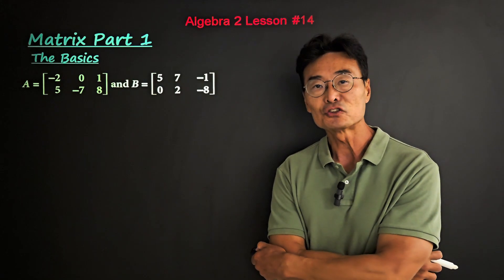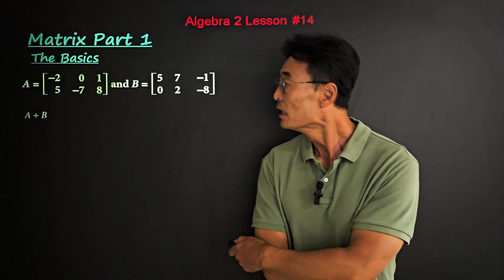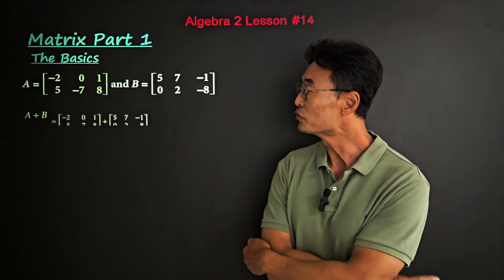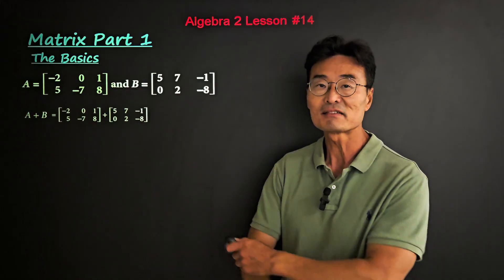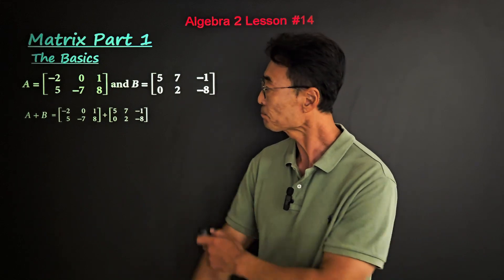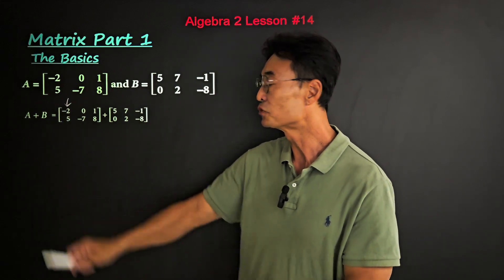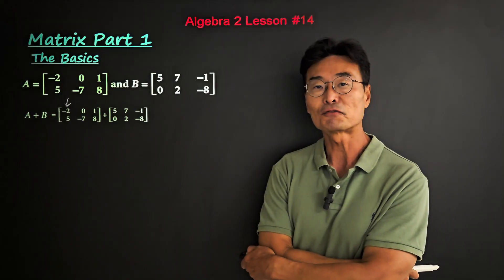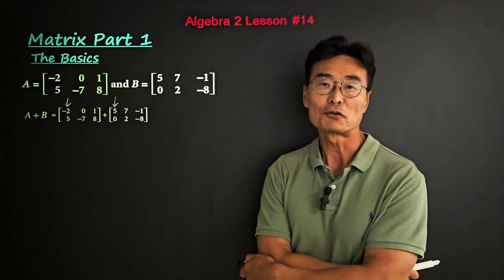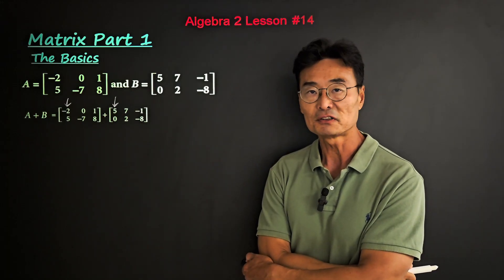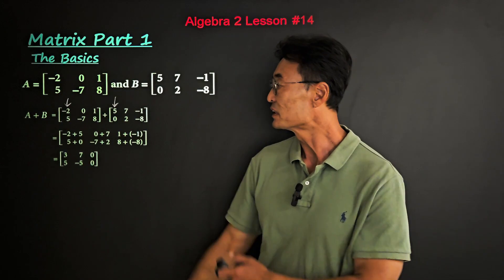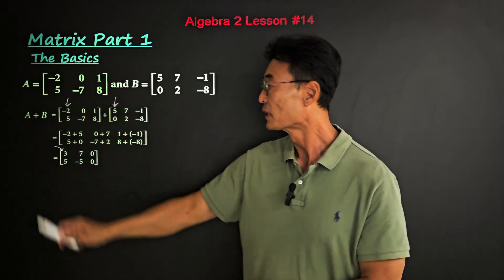Let's begin with adding two matrices. In order to add matrix A and matrix B, we're going to set it up like this, and we're going to add the two numbers that are in the same position. Notice that negative 2 is in the first row, first column position, and 5 is in the first row, first column position. Therefore, we're going to go ahead and do negative 2 plus 5, which gives us a value of 3.